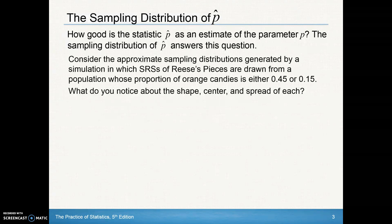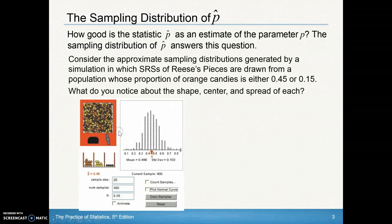As an example, consider the approximate sampling distribution generated by a simulation in which simple random samples of Reese's Pieces are drawn from a population whose proportion of orange candies is 0.45. With a sample size of 25 and 400 samples taken, with the known population proportion of 0.45, the computer-generated result gave us a p-hat of 0.48 — very close to our true population parameter p.